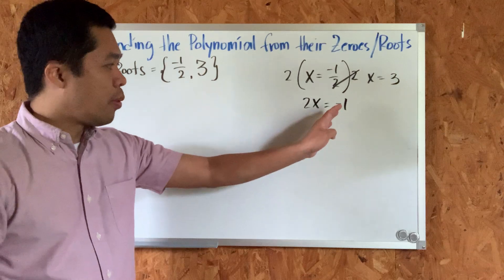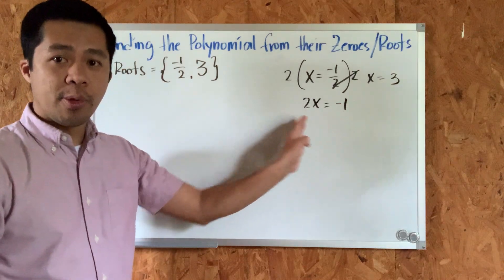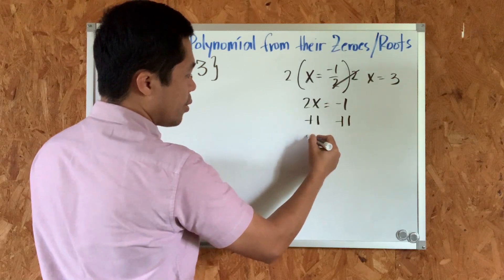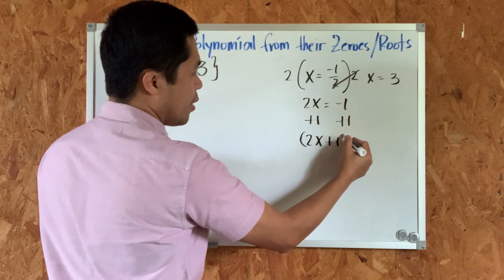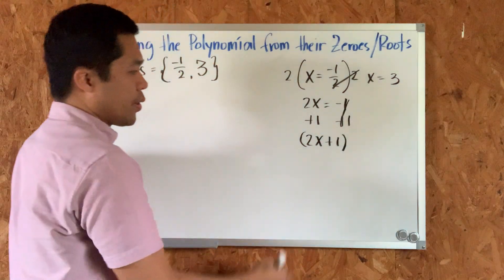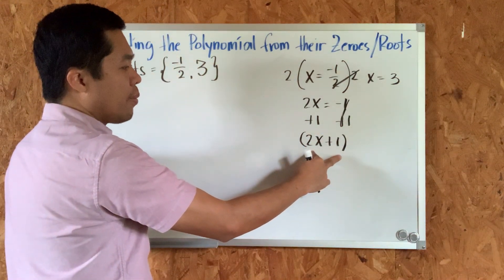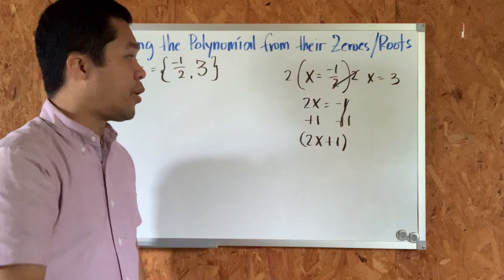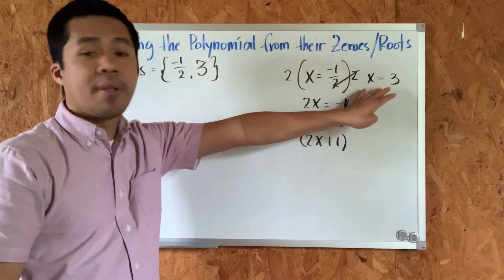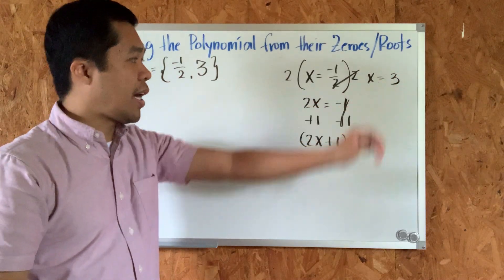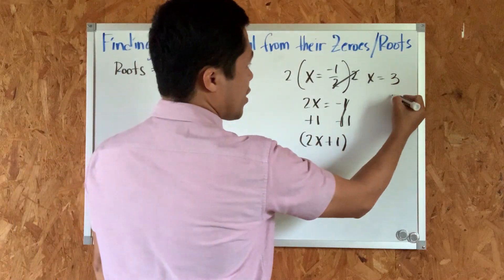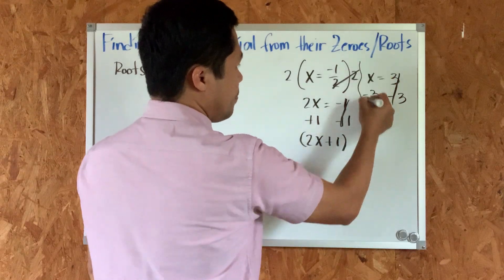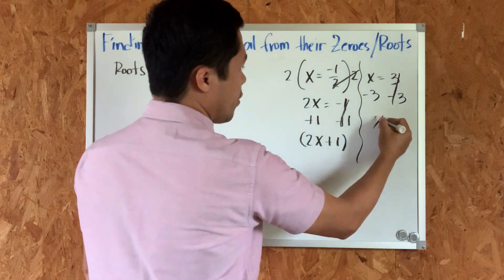Then we add one on both sides: plus one, plus one. Since we cannot combine those two, this gives us two x plus one equals zero. Now we have the binomial two x plus one. For the second root, x equals three, we subtract three from both sides, giving us x minus three equals zero.